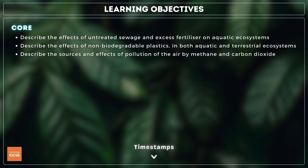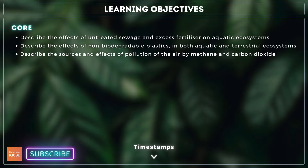you need to describe the effects of untreated sewage and excess fertiliser on aquatic ecosystems, describe the effects of non-biodegradable plastics, and describe the sources and effects of air pollution. For extended, you also need to explain the process of eutrophication.